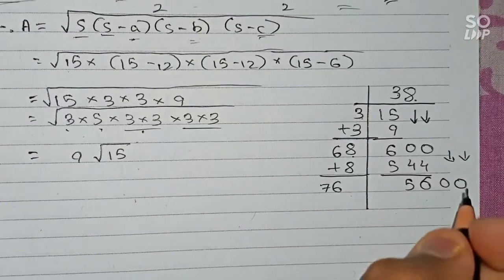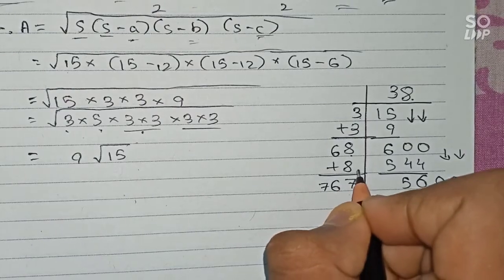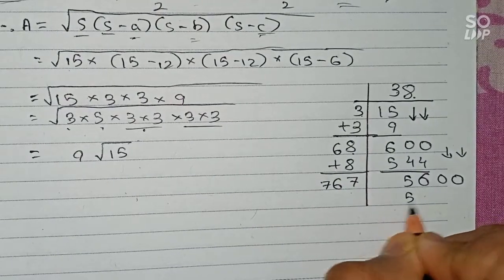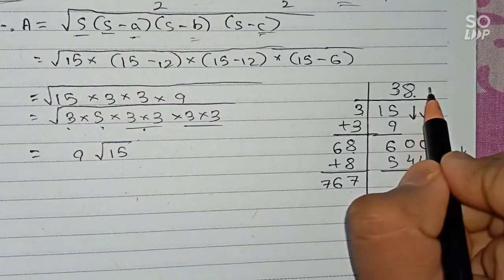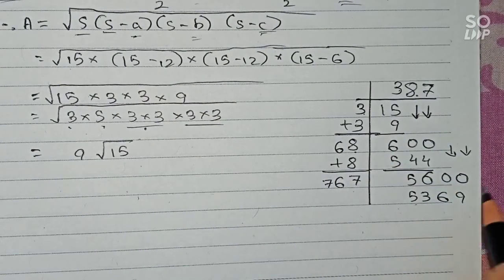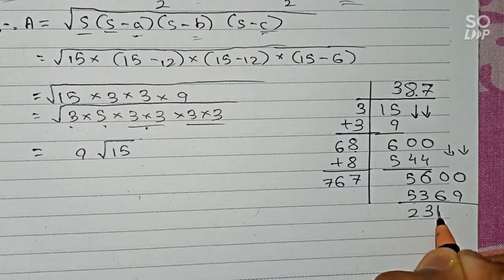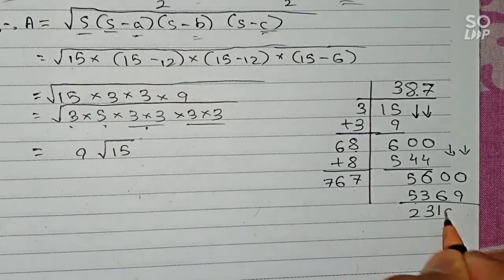So now 76. 7 will go... it will become 5369. So here 7 we put. 767, 7 times 767 is 5369. The remainder is 231, so two zeros again.